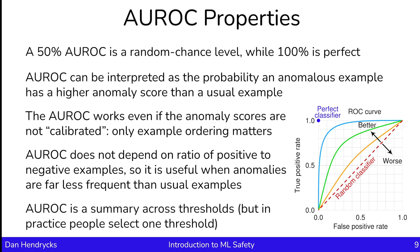The AROC is a summary across various threshold levels. In practice, people need to select one threshold to detect whether an example is actually anomalous. But the AROC summarizes performance across various different thresholds. We do this because we want to build models that work in many different situations—we don't know exactly what practitioners will want to set their detection threshold at, as that will depend on the ratio between false positives and false negatives and other statistics.